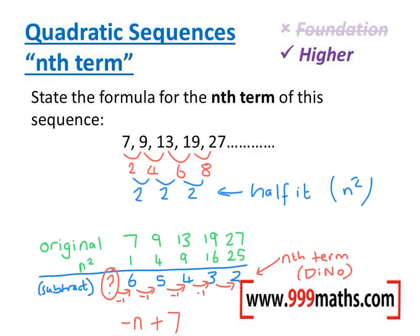So we just do normal nth term after we've done that subtraction. Now the two parts of our answers just need to now be combined to get our final answer. So the first part of our answer was n squared. The second part of our answer was minus n, add 7.